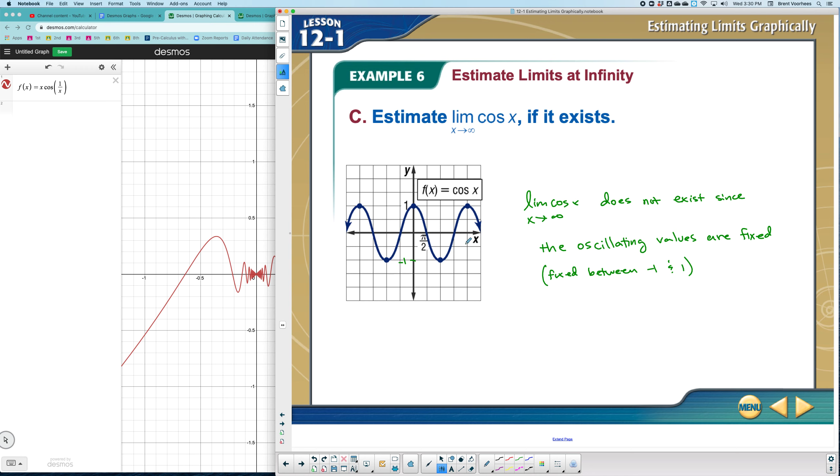Okay, so since the graph is going back and forth between 1 and negative 1, I would say this limit does not exist. So let me make sure you get that as the answer here. It does not exist because of how it's oscillating. Let me come back over here.